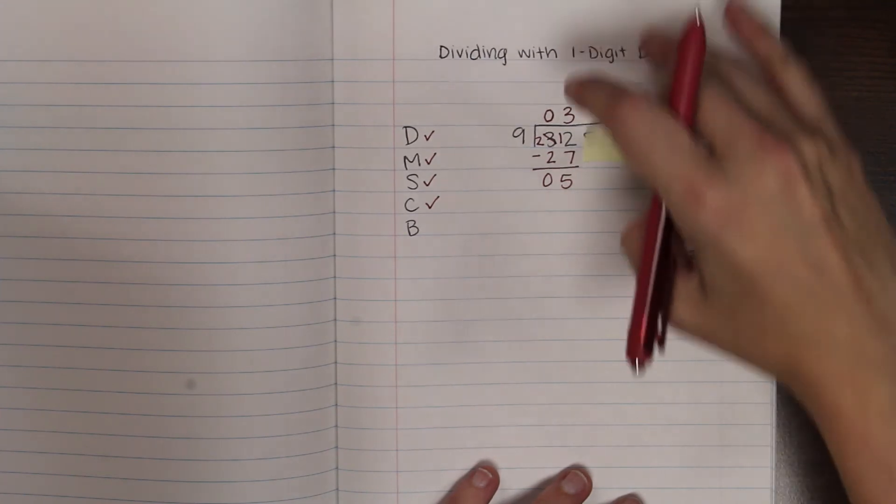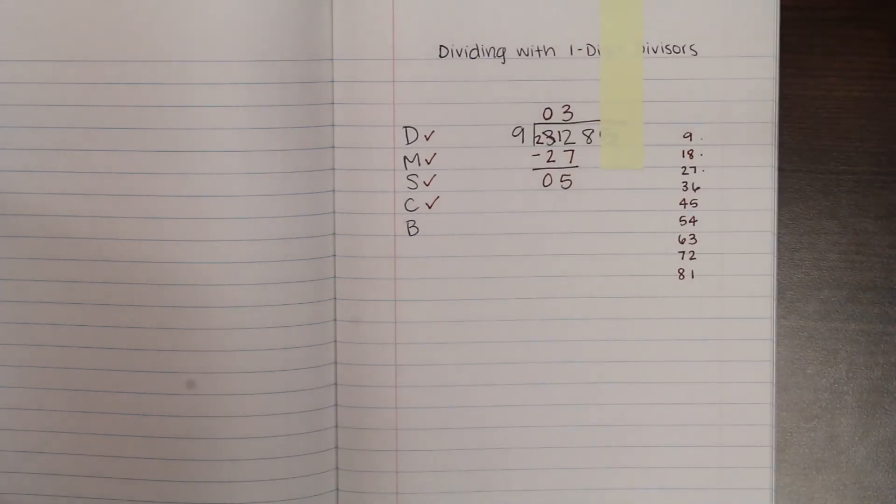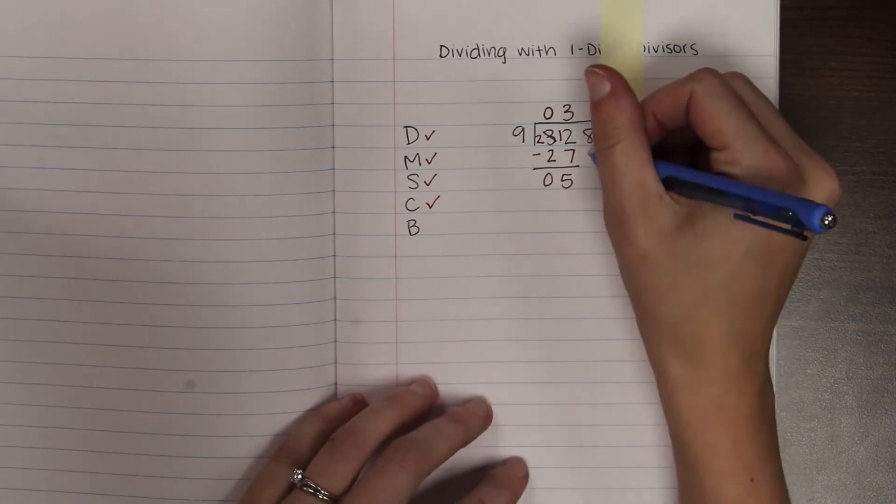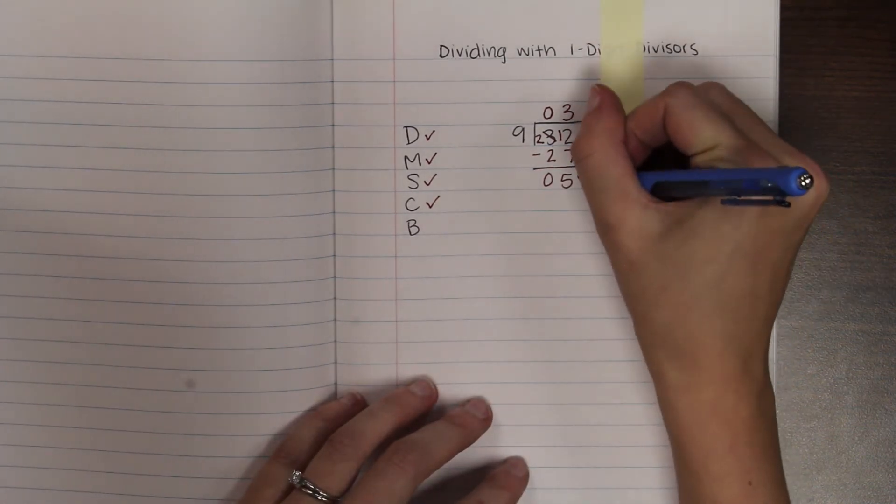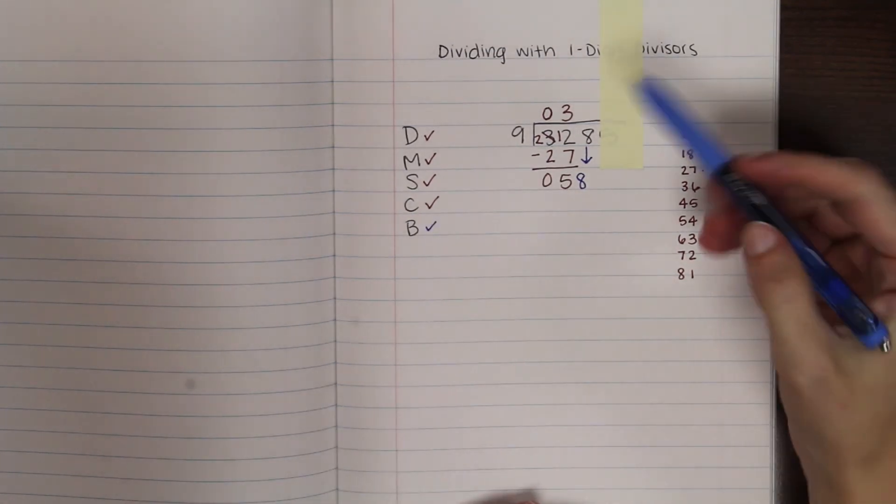And my last step is going to be to bring down my next digit, which in this case is 8. So I'm going to bring down 8. And I've got 58. And we start all over. That was bring down. We start all over.